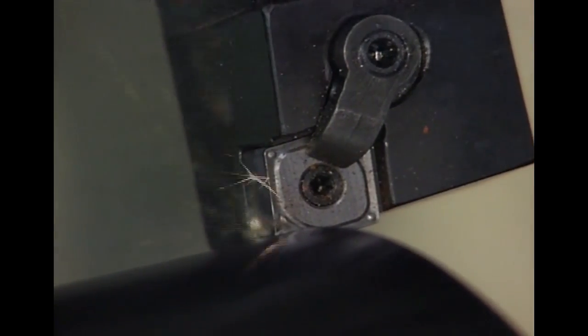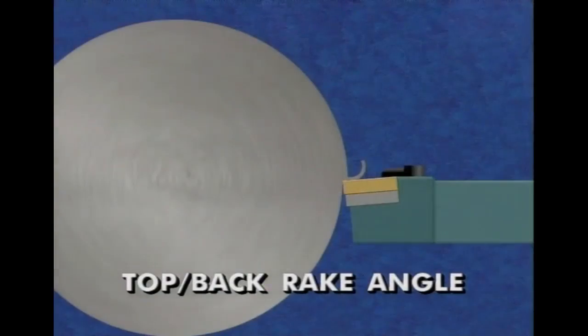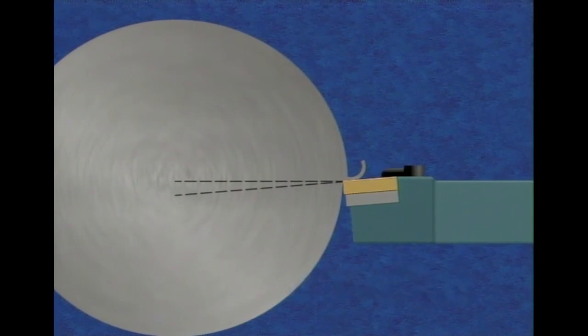The largest influence on chip flow in turning is the top or back rake angle. This is the angle created by the top of the cutting tool and an imaginary line drawn horizontally through the workpiece diameter. A positive rake cuts freely. A negative rake is stronger but generates more force in cutting.